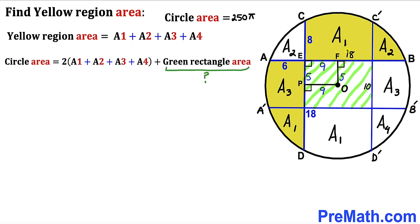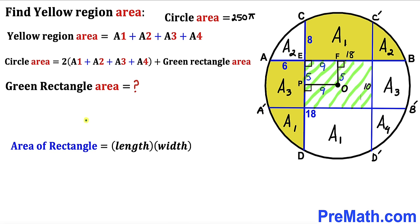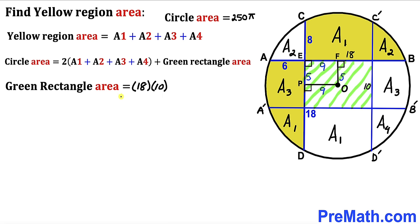Recalling the area of a rectangle formula: area equals length times width. The area of this green rectangle is 18 times 10, which turns out to be 180.